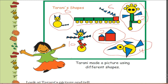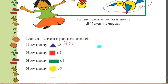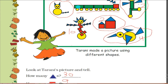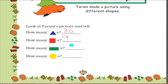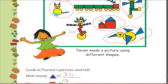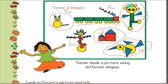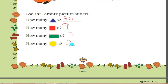Counting squares: Tarani used nine squares. How many green rectangles? One, two, three, four, five, six, seven - seven green rectangles. And how many yellow circles? Counting up to twenty-four - she has used twenty-four circles.